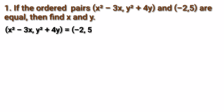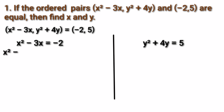We equate the coordinates: x² - 3x = -2 and y² + 4y = 5. Rearranging, we get x² - 3x + 2 = 0 and y² + 4y - 5 = 0. These are the equations we will factorize.